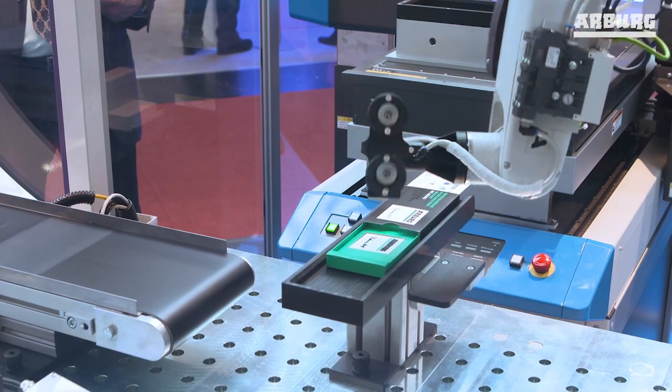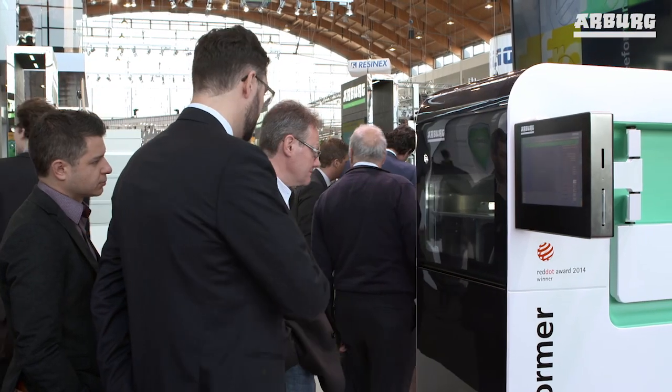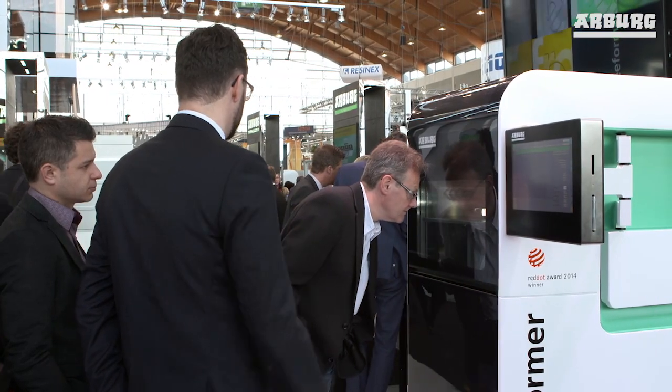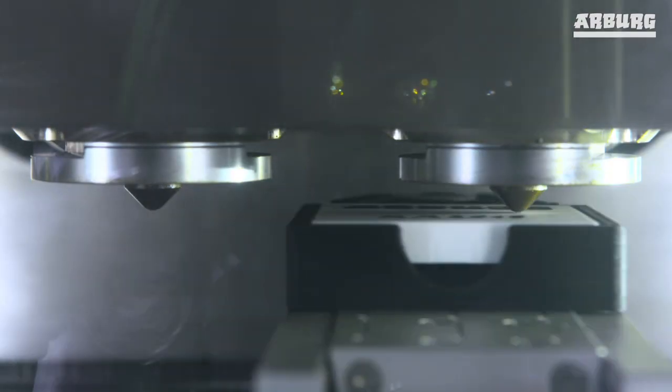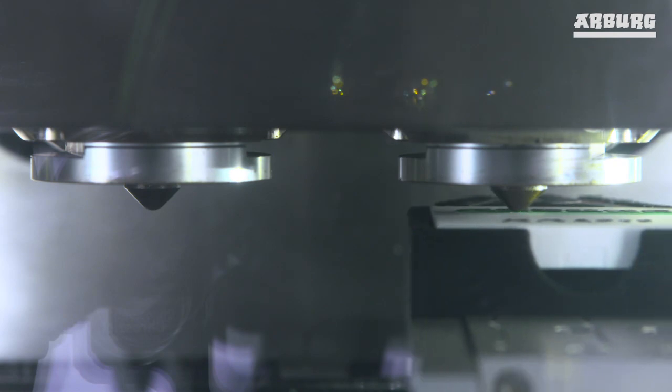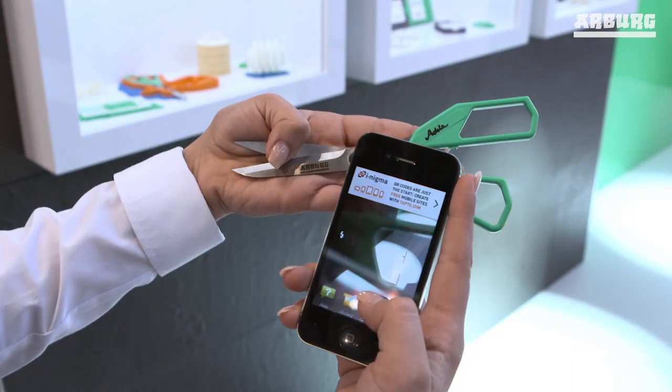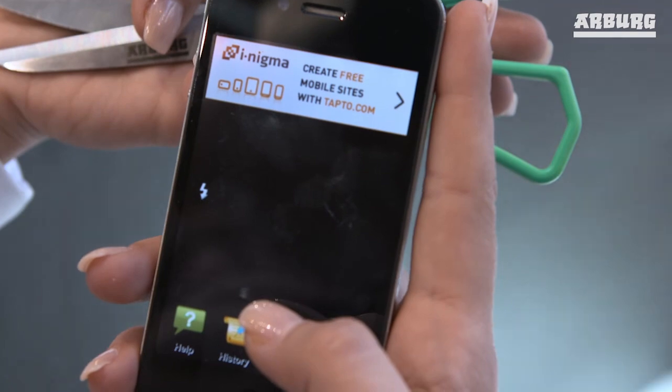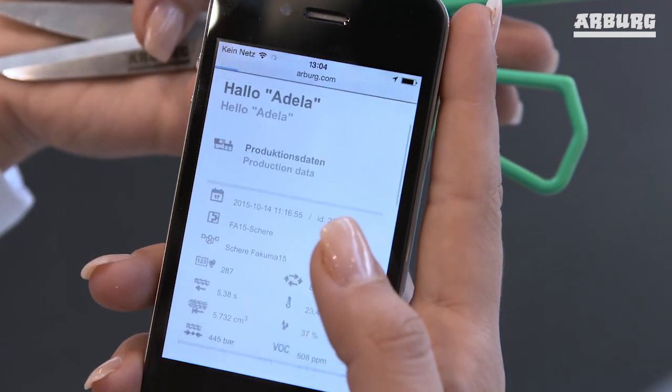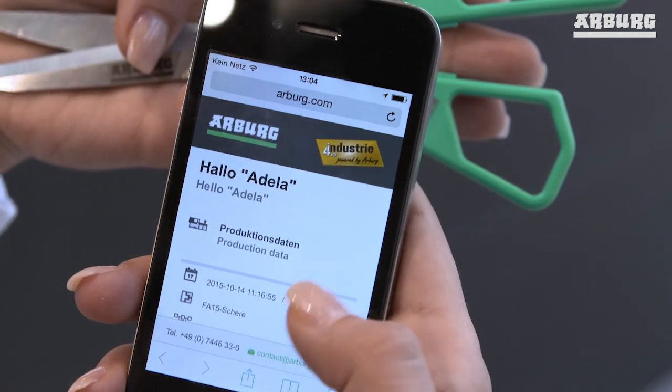The combination of conventional production methods such as injection molding and new production technologies like additive manufacturing permits personalized production and the manufacture of individualized one-off parts on the basis of high unit volumes, and therefore enables integration of the customer's wishes and requirements directly into the value-added chain.